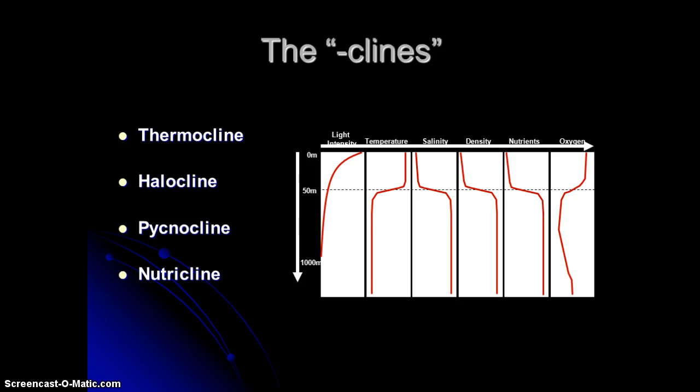Now the place where those things make this sharp incline, we call those the clines, right? So if we're talking about temperature, we say thermocline. So the thermocline is where we get this strong stratification, or this strong change in temperature. The halocline, halo means salt, so that's where the salinity makes this gigantic change in how much salt there is between the two layers.